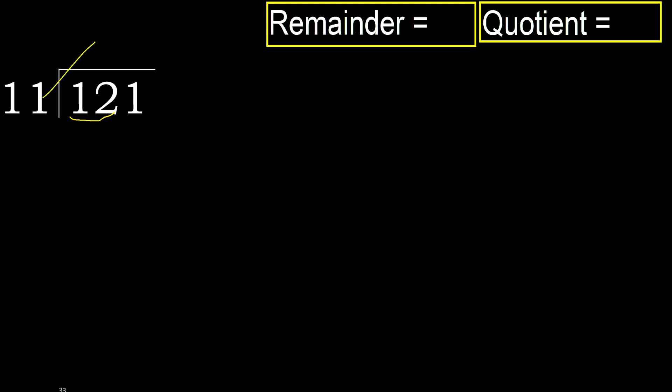11 multiplied by which number is nearest to 12 but not greater? 11 multiplied by 2 is 22, which is greater. Multiplied by 1, 11 is not greater. Okay, subtract: 12 minus 11 is 1.